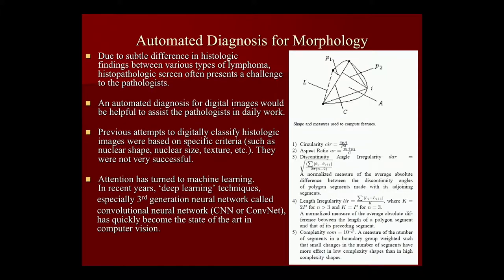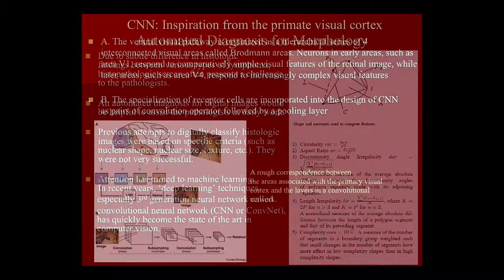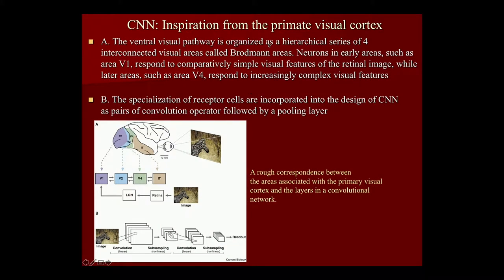Previous attempts to classify histologic types of lymphoma were based on histology features such as nuclear size and nuclear texture, but they have not been found to be successful. Attention has turned to machine learning in recent years, and deep learning has shown very promising results. The convolutional neural network — now abbreviated as CNN — is a deep learning neural network that draws inspiration from the primate visual cortex.